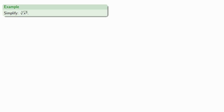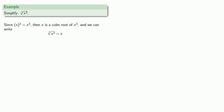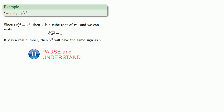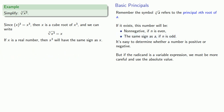If we want to simplify the cube root of x³, since x³ is x³, then x is a cube root of x³, and we can write ∛(x³) = x. Do we need absolute value here? If x is a real number, then x³ will have the same sign as x. Since we're dealing with the principal cube root, it must have the same sign as what we started with. So x and x³ have the same sign, and we don't need to do anything.